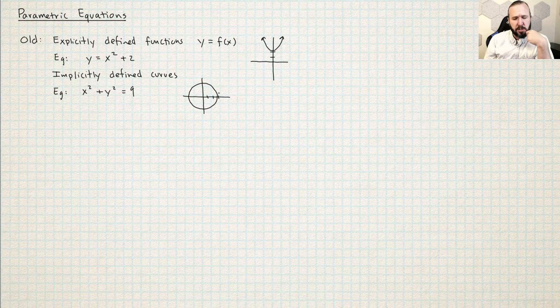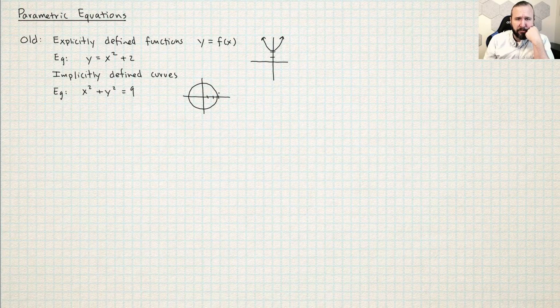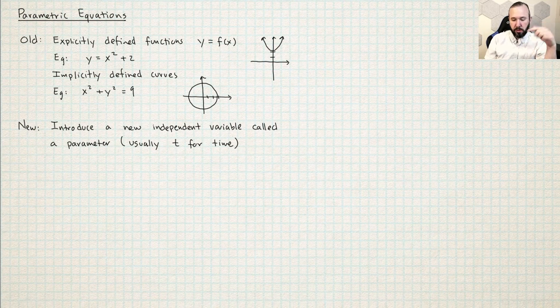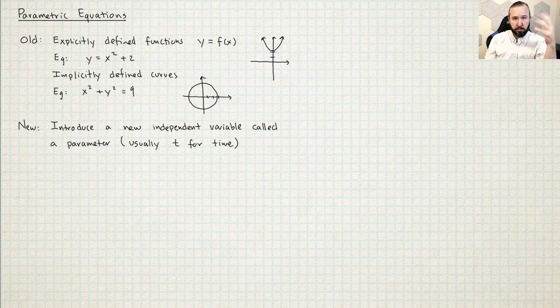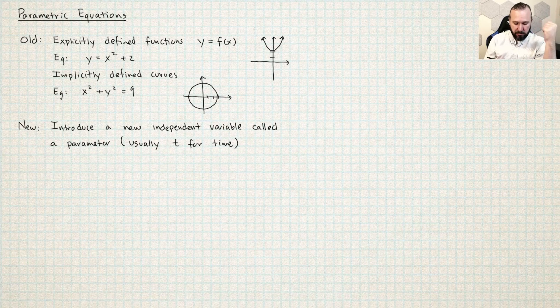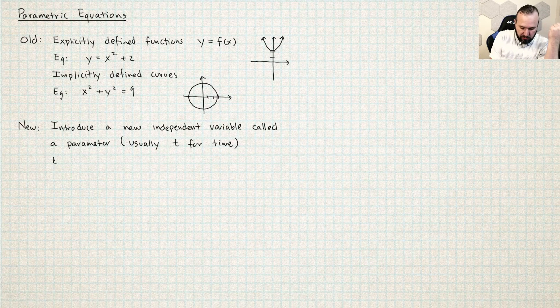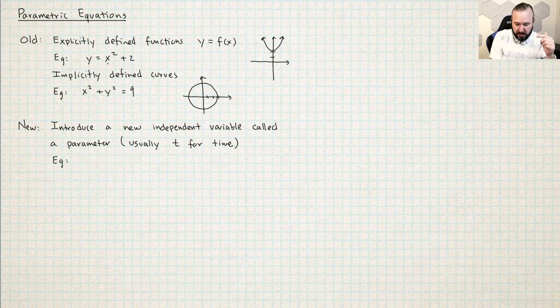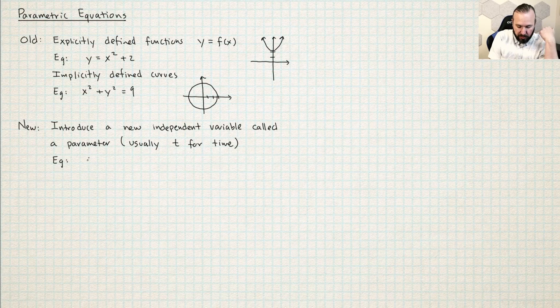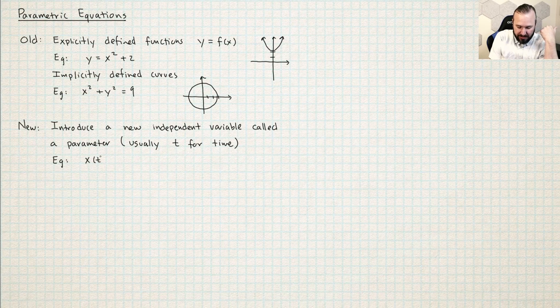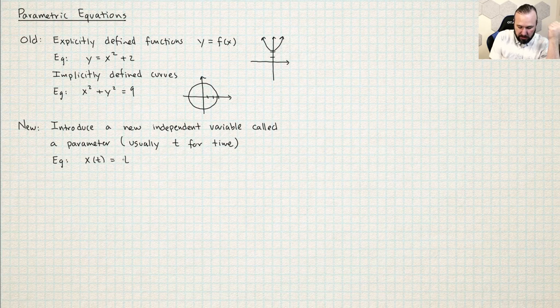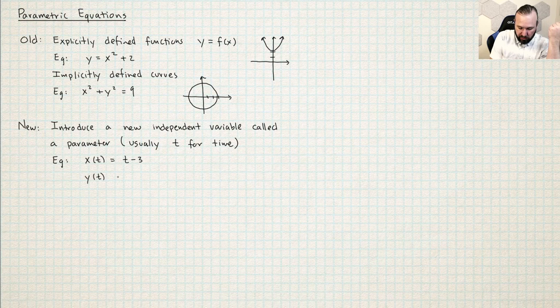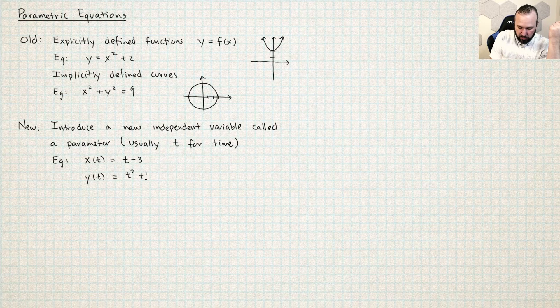So we're going to change the paradigm a little bit and have a kind of new way of defining equations. So our new model here is we're going to introduce a new variable, a new independent variable, and we're going to call it usually t for time. So now instead of y being a function of x, what we're going to have is x is going to be a function of t, let's say t minus 3, and then y will also be a function of t, let's say t squared plus 1.